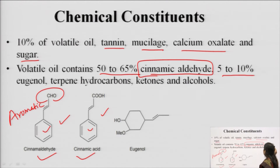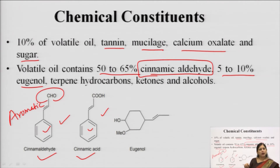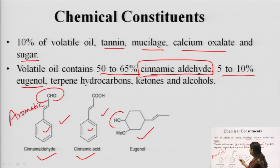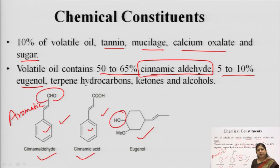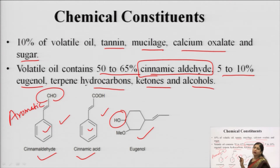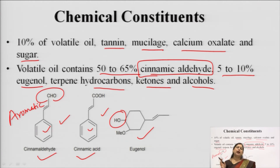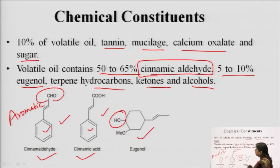Cinnamon also contains some eugenol — as we studied in clove, eugenol was also present there. Eugenol is cyclic but non-aromatic and contains a hydroxy group. The three main constituents are cinnamic aldehyde, eugenol, and cinnamic acid, along with other terpenes or volatile oils mainly as hydrocarbons, ketones or alcohols. It is a complex mixture, but the main ingredients are the cinnamic aldehyde derivative, cinnamic acid derivative and eugenol.